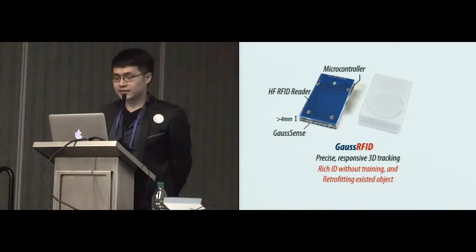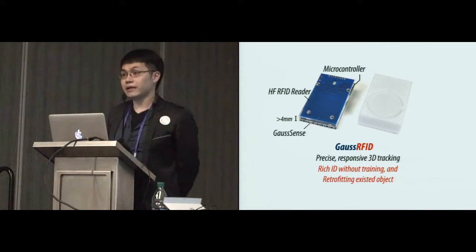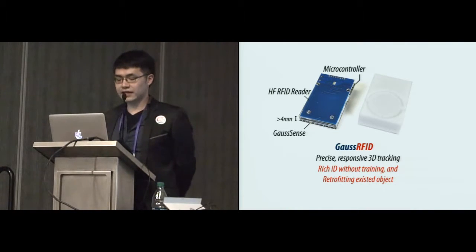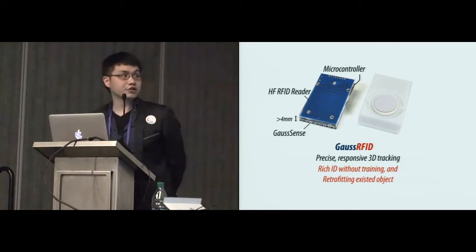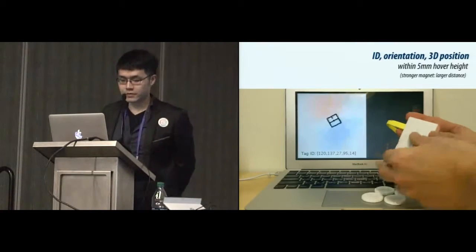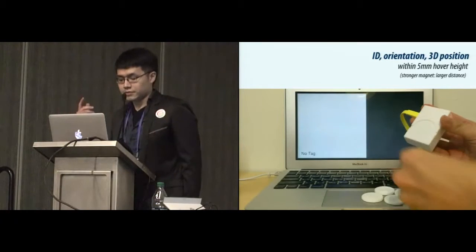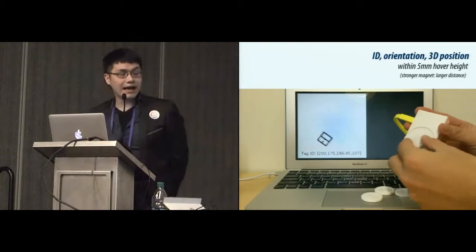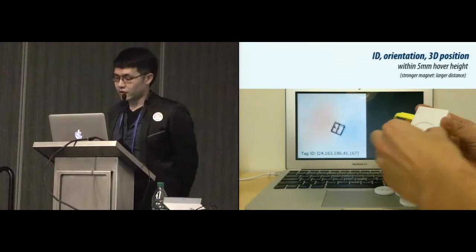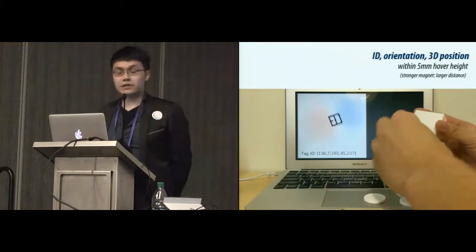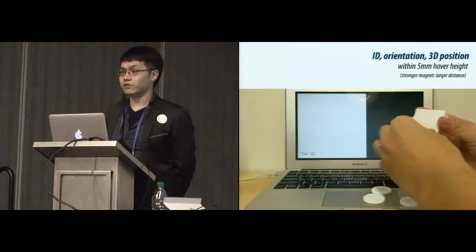To realize this, these two sensors need to be synchronized by a microcontroller and separated in a few millimeters to avoid interferences. Also, a physical constraint is applied on the top of the sensor to keep the tag in the sensing range while moving. Putting everything together just works. The combined sensors steadily track the ID, orientation, and 3D position of the tag within at least 5-millimeter hover height with no training efforts required.